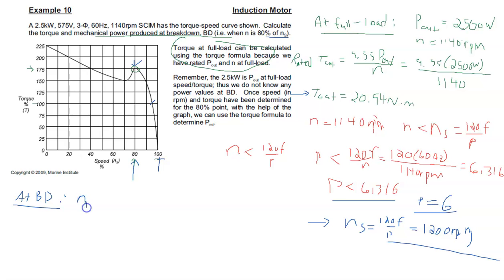At breakdown, the speed will be 80% of Ns. So that means 0.8 times the 1200, and you don't get the right answer if you use the 1140 here. If you do that, you come up with 960 RPM.